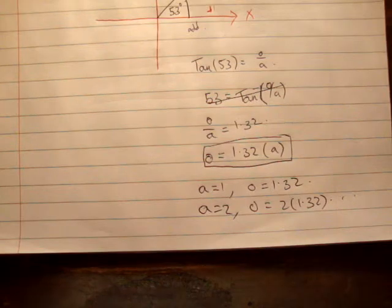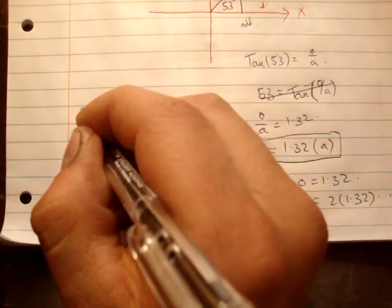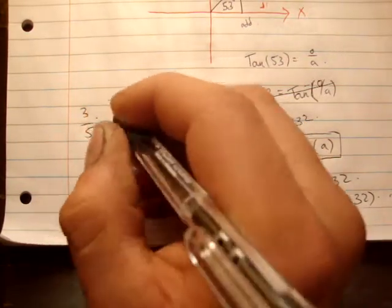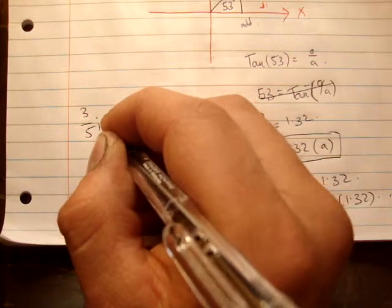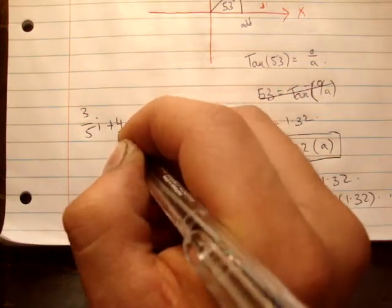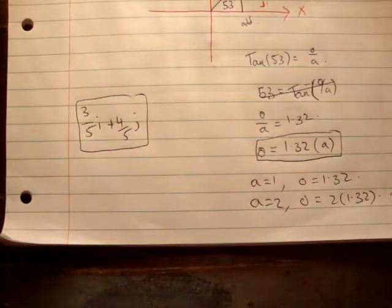Now, the thing is, in the book you're given an answer. The answer in the book that's given is 3 fifths i hat plus 4 fifths j hat. Okay. That's the answer given in the book.